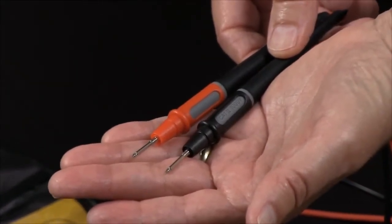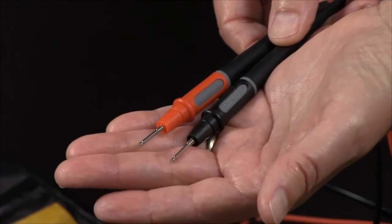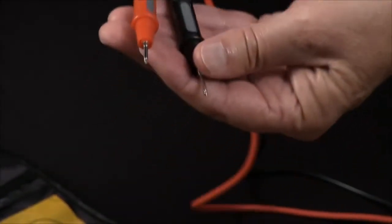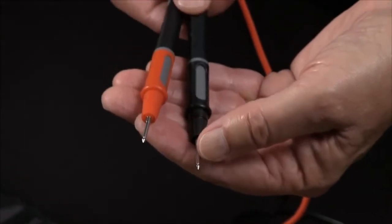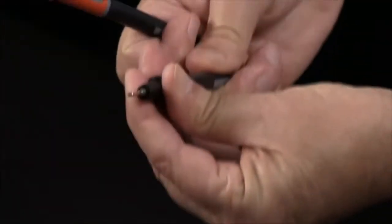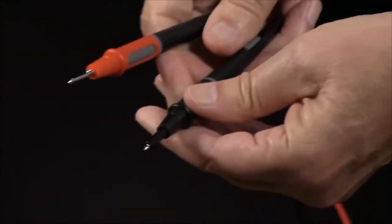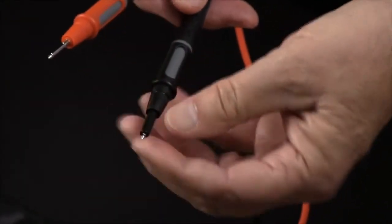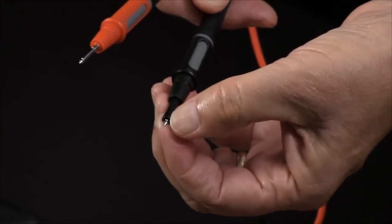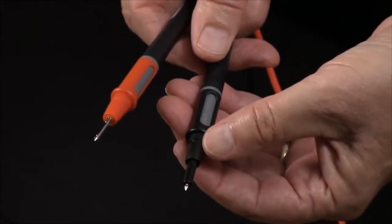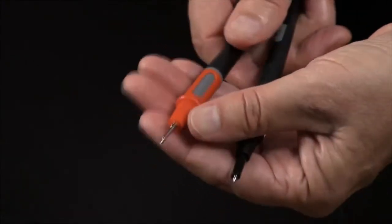But when you get into a high-energy electrical situation, you need something with less exposed metal. In this configuration, these probes are rated Category 2, 1000 volts. But they have a twist cover capability, and when you reduce the amount of exposed probe tip, the category rating goes to Category 3, 1000 volts, and Category 4, 600 volts.